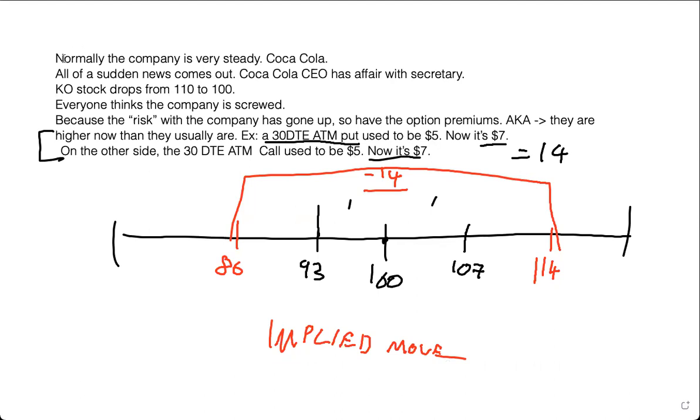Just to recap quickly, what we've done here is we're going over a scenario, a hypothetical about Coca-Cola where some news comes out, CEO has an affair with the secretary, Coca-Cola stock drops by 10% more or less. Everyone thinks the company's screwed. And because the risk has gone up, so have the option premiums. The ones that used to be $5 are now $7. Meaning the market is saying over the next 30 days, we expect KO to be plus or minus 14% from where it is now.